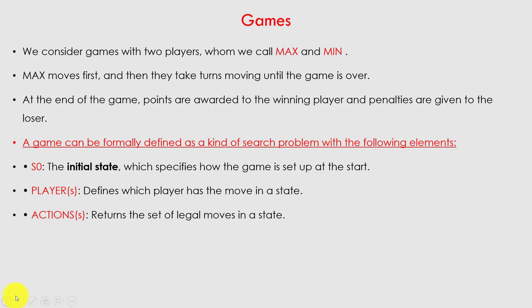Next are actions — these return the set of legal moves in a state. After the max player has played, we decide what the legal move is to proceed. Legal values, as we've seen previously in constraint satisfaction problems, mean valid or permissible values, so that the player should act intelligently.